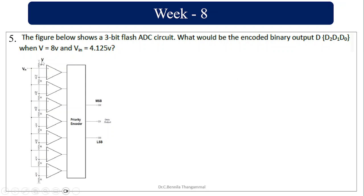The reference voltage V is 8 volts and VIN is 4.125 volts. You have to compare VIN with the voltages generated at each tap: 7V/8 = 7V, 6V/8 = 6V (that is 3V/4), 5V/8 = 5V, V/2 = 4V, 3V/8 = 3V, V/4 = 2V, and V/8 = 1V.